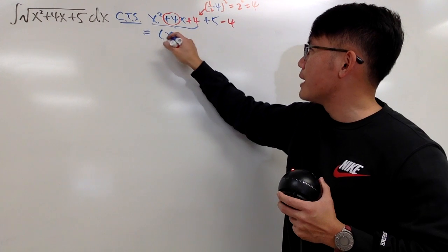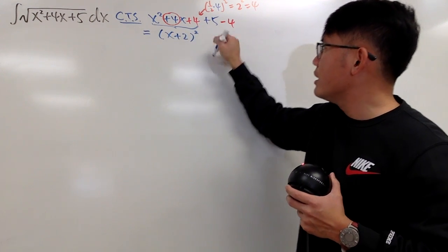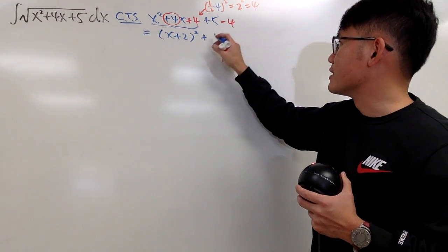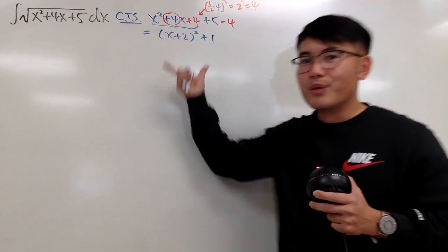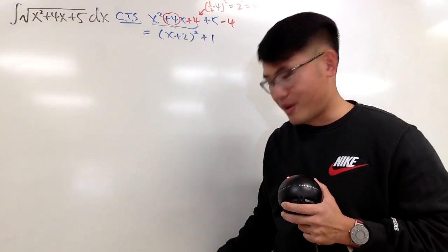Factor this, you get x plus 2 times x plus 2, namely x plus 2 squared, and then this and that, of course, 5 minus 4 is 1. Now, we'll just put this inside, and then we'll continue from there.